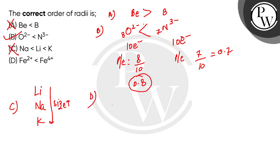In option D, we have Fe²⁺ and Fe⁴⁺. The electron counts are different, but the proton count is the same. Whichever has fewer electrons will be smaller. So Fe⁴⁺ will be smaller, and Fe²⁺ will be bigger than Fe⁴⁺. But here in option D it's written incorrectly.